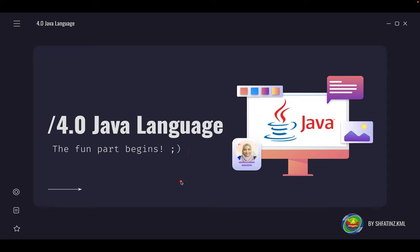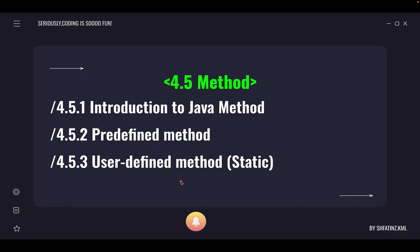Assalamualaikum and hello guys. In this lecture we're going to look at the next subtopic which is the last ever subtopic in Topic 4: 4.5 Method. In Topic 4.5 there will be three subtopics: 4.51, 4.52, and 4.53. Today we're going to cover the first two subtopics: introduction to Java method and predefined method.